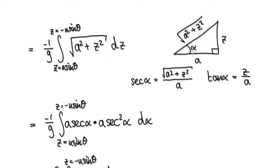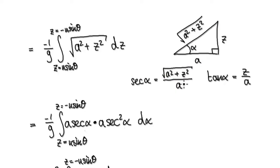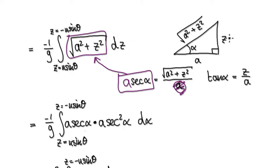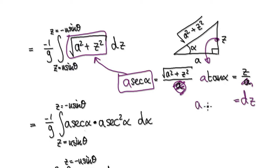Looking at this triangle, if this angle is alpha, secant alpha equals hypotenuse divided by adjacent, and times both sides by A gives Z in terms of secant alpha. For DZ, tan alpha equals Z over A, so times both sides by A, then differentiate both sides: DZ equals A secant squared alpha d-alpha.